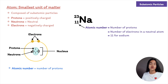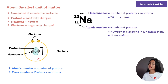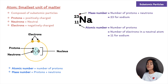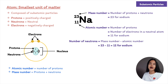The atomic number tells us the number of protons and electrons in an electrically neutral atom. We can combine protons and neutrons to determine the mass number — the total number of protons and neutrons in the nucleus. The mass number is written as a superscript to the left of the element symbol. For sodium, the 23 at the top is the mass number and the 11 is the number of protons and electrons. We can determine the number of neutrons by subtracting the atomic number from the mass number.